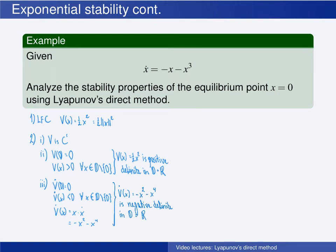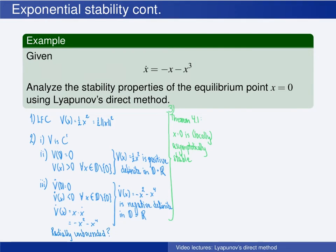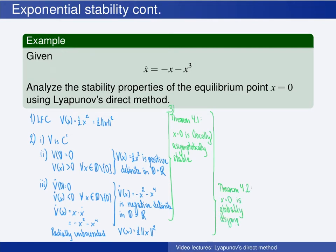Is it also globally asymptotically stable? We check whether the Lyapunov function is radially unbounded. Since v(x) equals one-half times the norm of x squared, if the norm of x goes to infinity, then v also goes to infinity. So v is radially unbounded. Then by theorem 4.2, the origin is globally asymptotically stable.